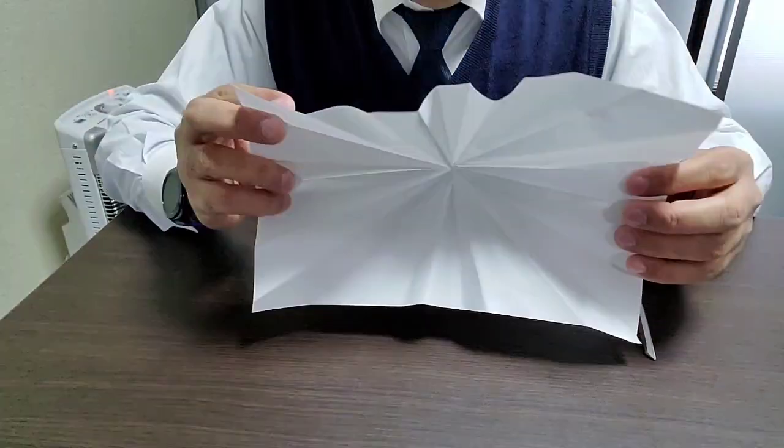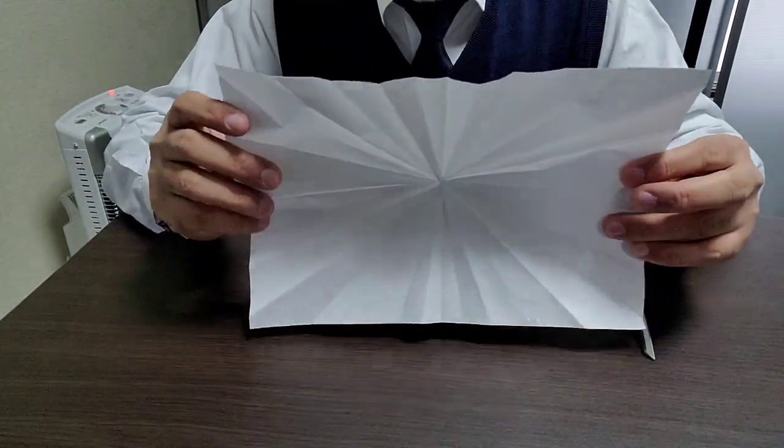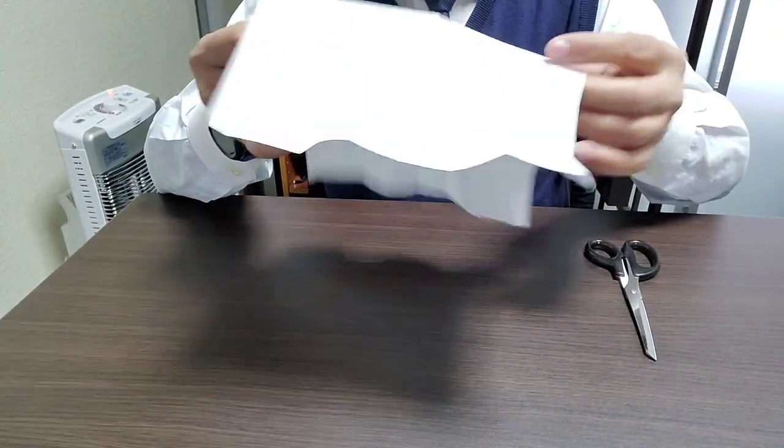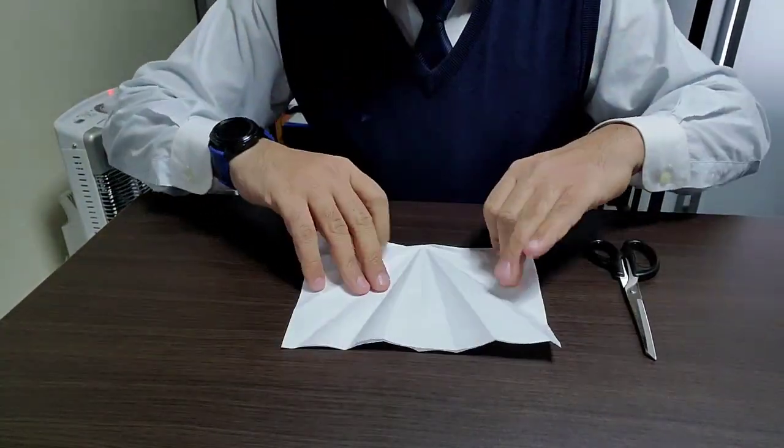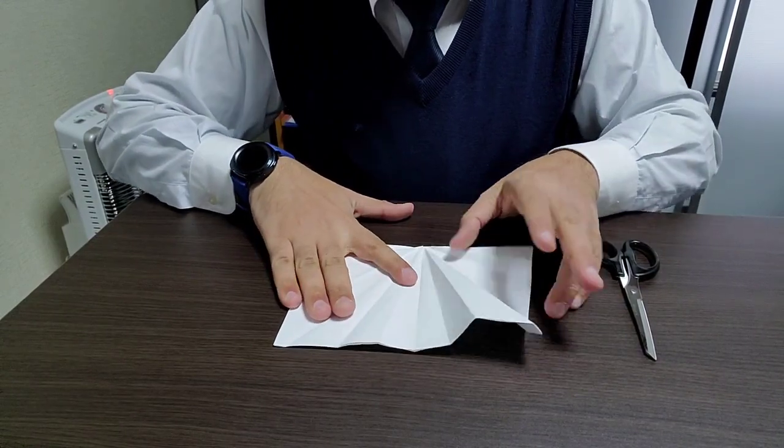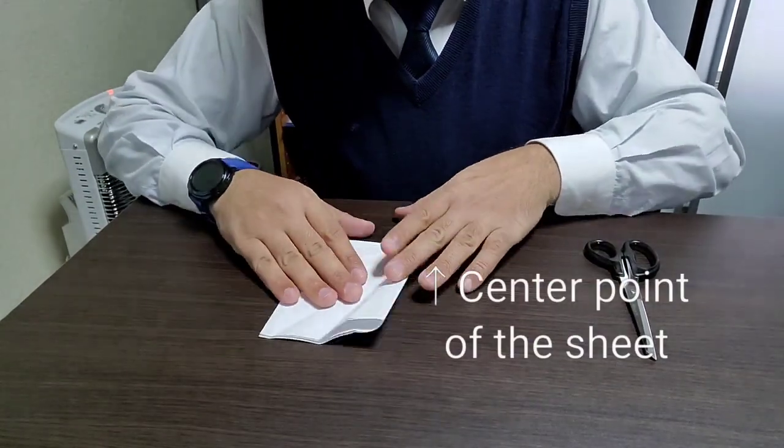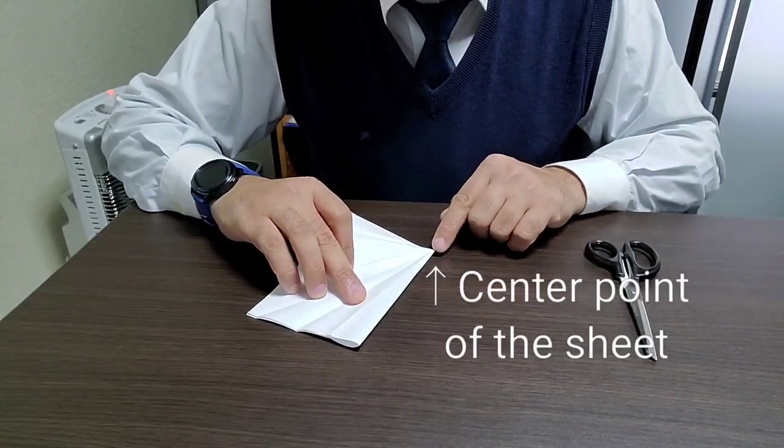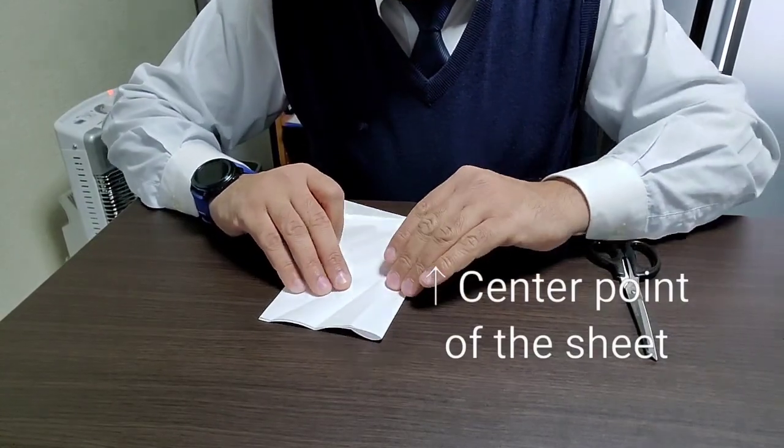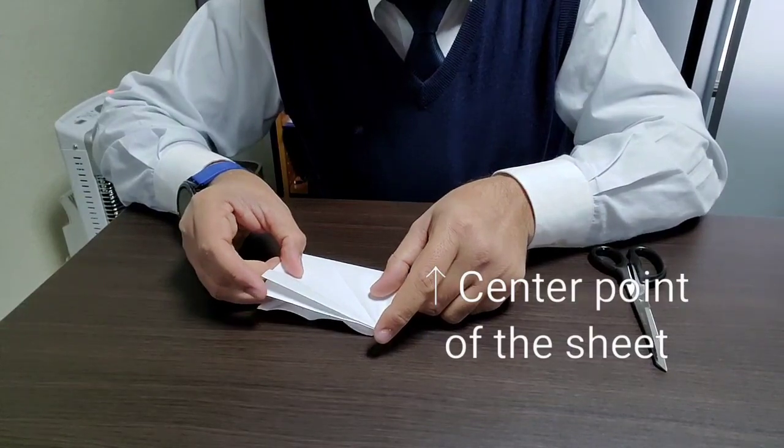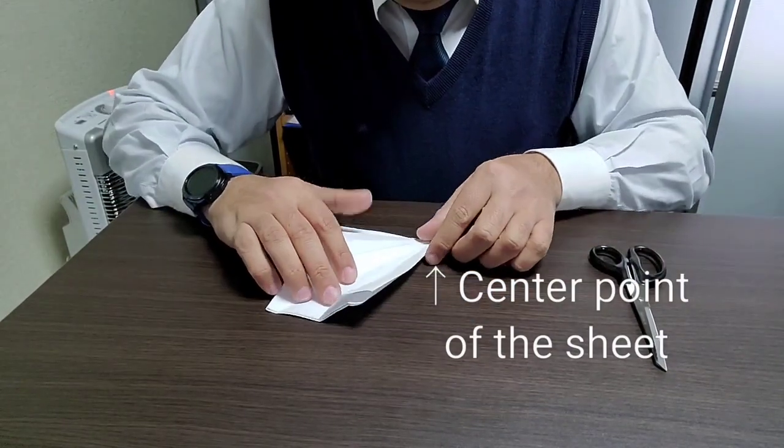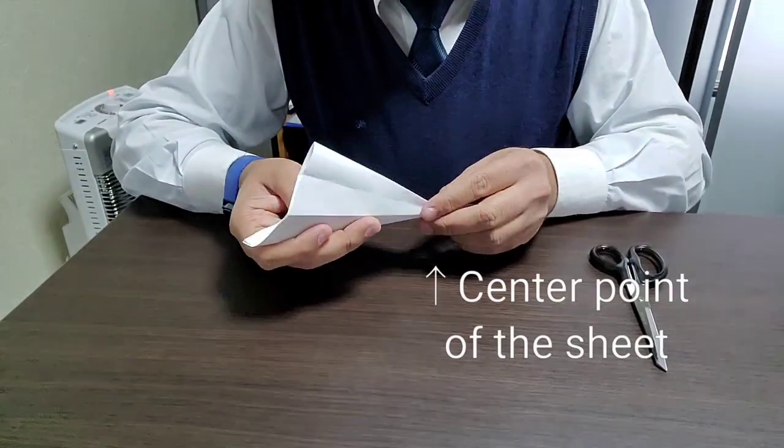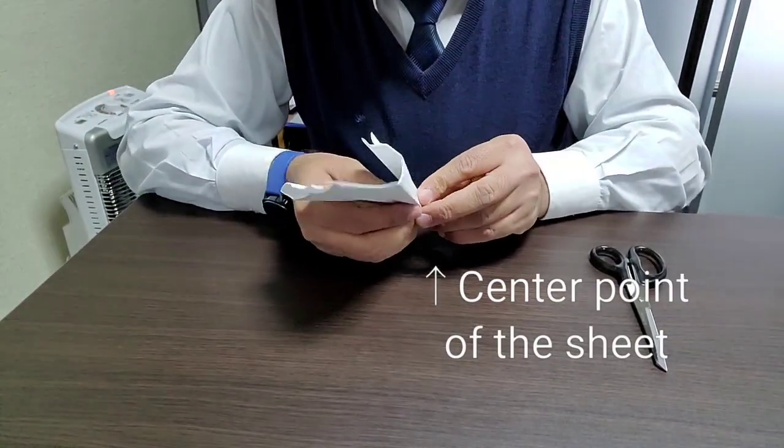So the first fold is this way, this is the first fold. The second fold is this way. Now the third fold, because you have to keep the center, this is the center, so don't make it this way or that way, otherwise you'll fail. The third fold goes this way.